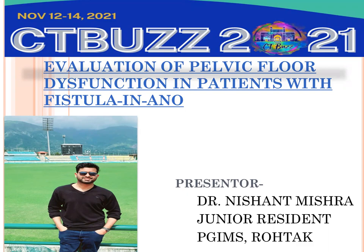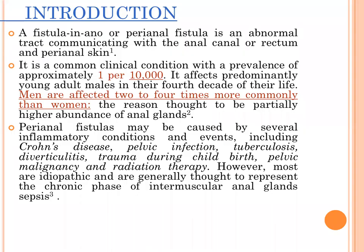Fistula-in-ano, basically perianal fistula, is an abnormal tract communicating with the anal canal or rectum and perianal skin. It is a common clinical condition with a prevalence of approximately 1 per 10,000, affecting predominantly young adults in their fourth decade of life. Men are affected 2 to 4 times more commonly than women, thought to be partially due to higher incidence of anal glands in men.